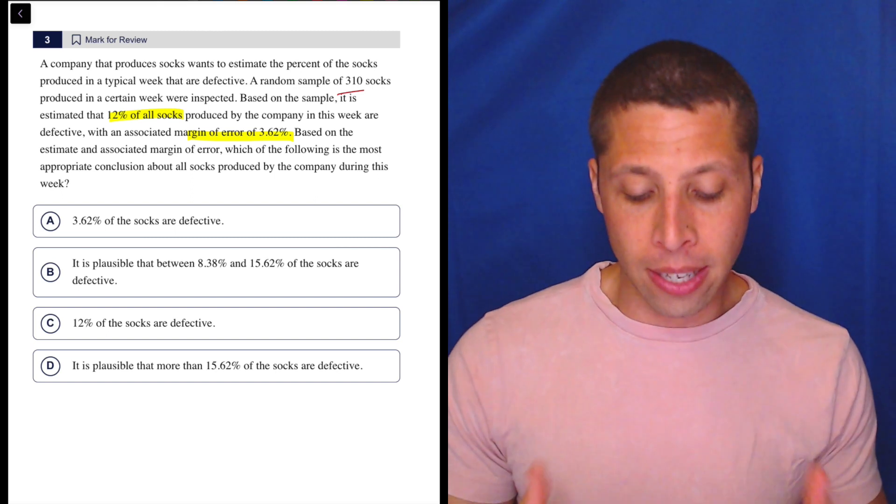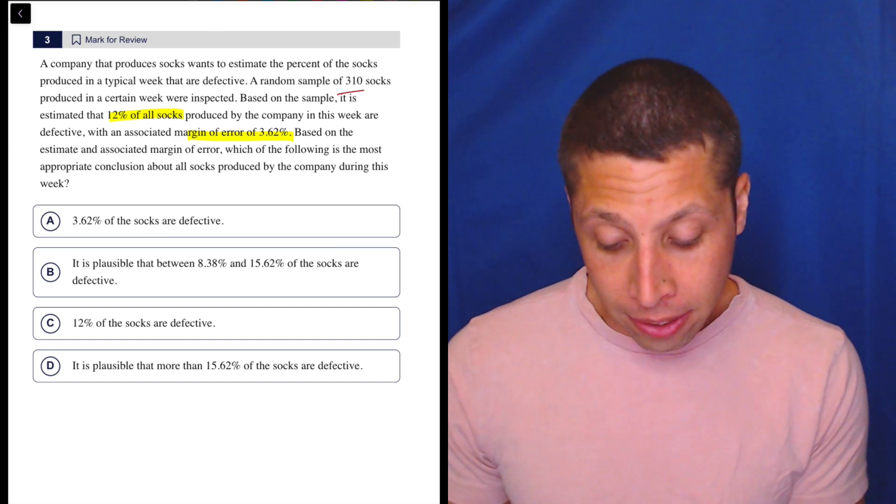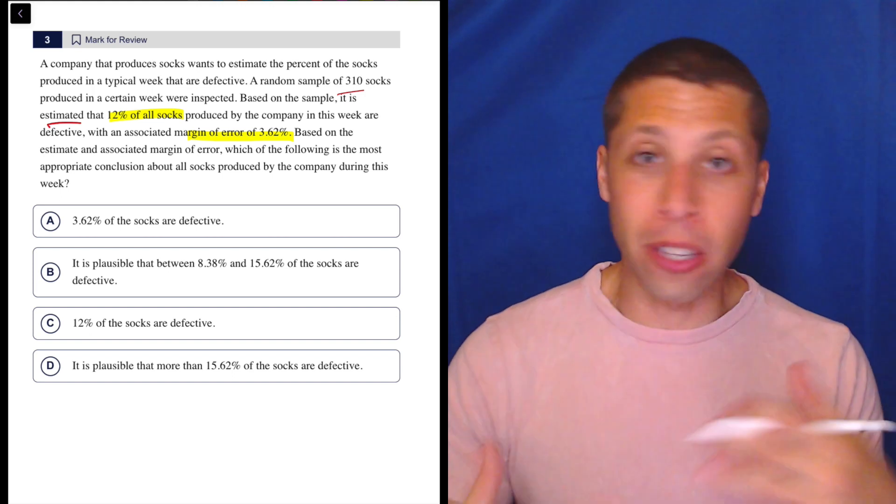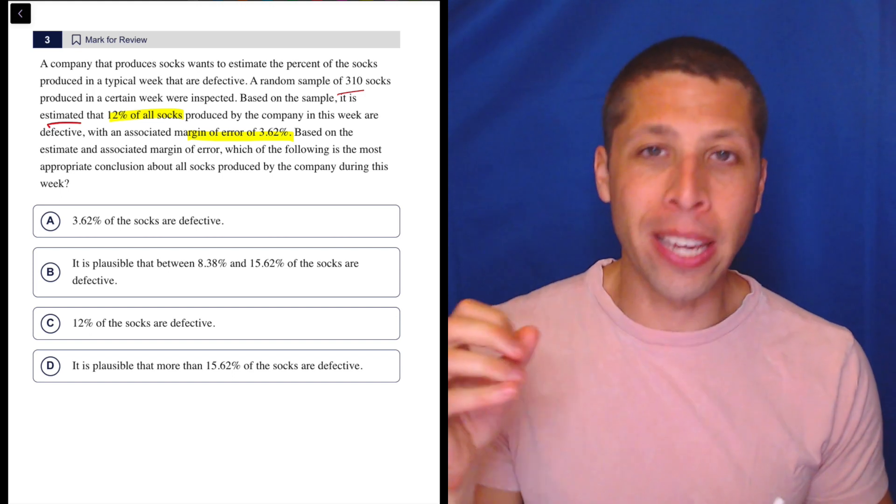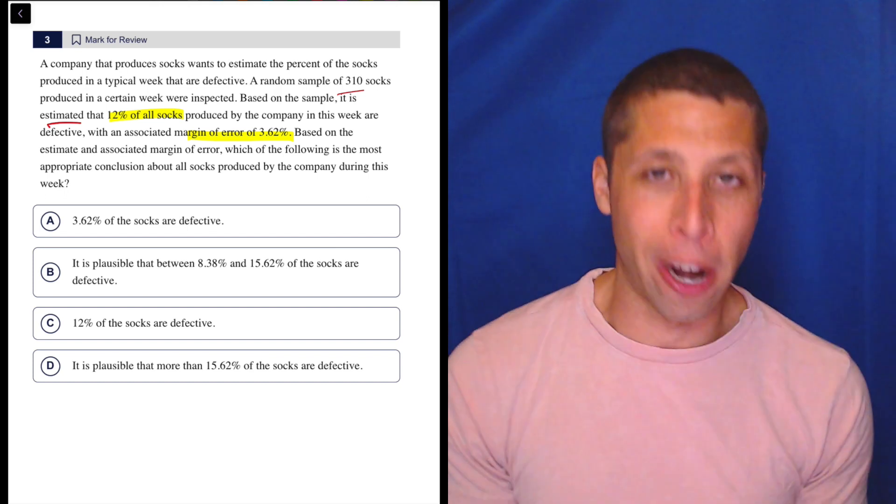All we need to recognize is that what a margin of error is doing is it's taking our average, our estimate, and it's adding and subtracting to kind of give us a range. Because when you do statistics, you might sample something and get a number as your average or whatever, but that doesn't mean that's the actual average of the entire population.